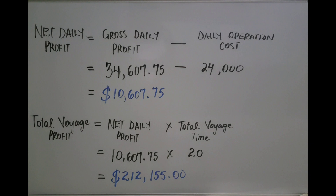Finally, the total voyage profit is net daily profit multiplied by total voyage time. So $10,607.75 × 20 days = $212,155 total voyage profit.